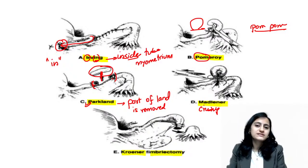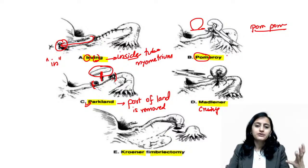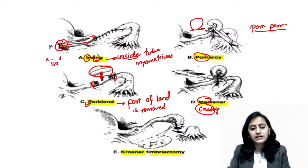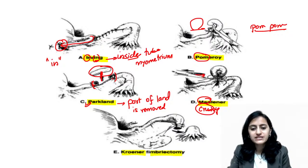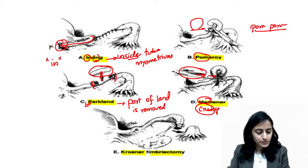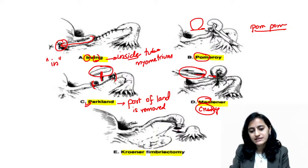In Madlener's technique, only crushing is done. Remember: when you have a crush on someone, you are mad about that person — so mad about crush. It is only the crushing which is done, as shown here with the forceps. No cutting is involved.